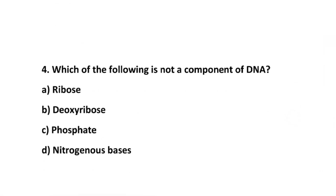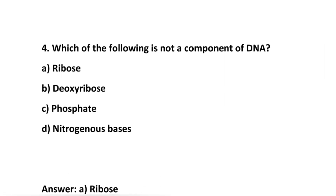Number 4: Which of the following is not a component of DNA? Option A: Ribose. B: Deoxyribose. C: Phosphate. D: Nitrogenous bases. Option A is the correct answer because it is ribose, and DNA contains deoxyribose sugar — it does not contain ribose. Ribose is present in RNA.